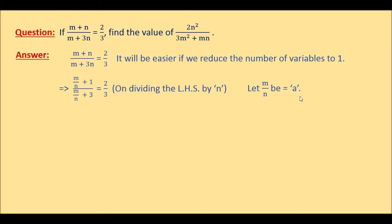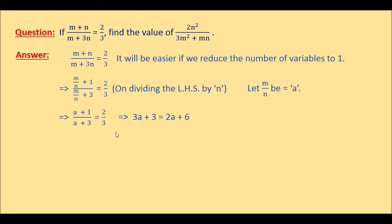Now let us denote m over n to be equal to a. We are taking m over n to be equal to another variable a — that is how we are reducing the number of variables to 1. m over n contains two variables but we are representing it as a, which is a single variable. So in place of m over n, we write a. Therefore, it is a plus 1 in the numerator and a plus 3 in the denominator, which is equal to 2 over 3. Now we can do the cross multiplication: 3a plus 3 equals 2a plus 6.